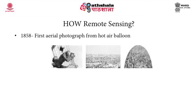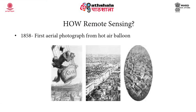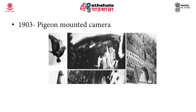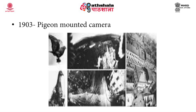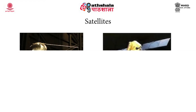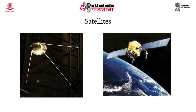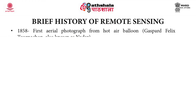How is remote sensing carried out? The first aerial photograph was taken from a hot air balloon in 1858 over the city of Boston. In 1903, a pigeon-mounted camera was used to collect remotely sensed data. The latest in this trend is satellites, which have been used since the 1960s and 70s to collect information about various features on the surface of the Earth.